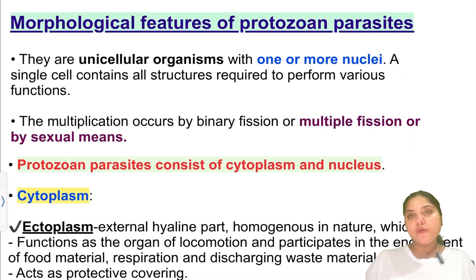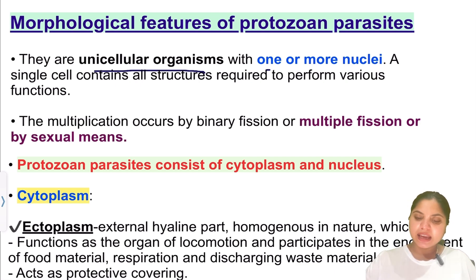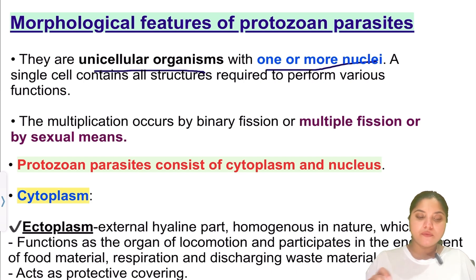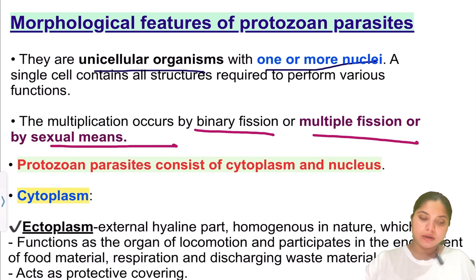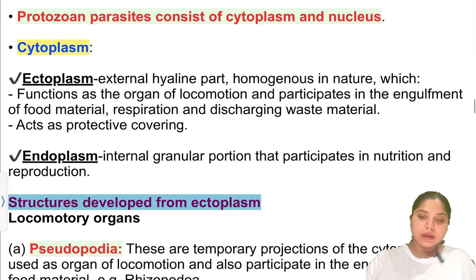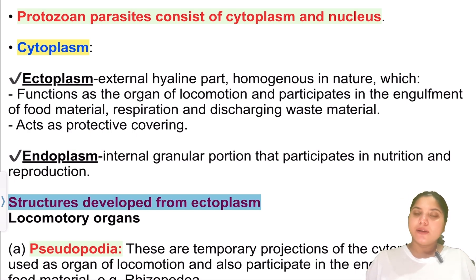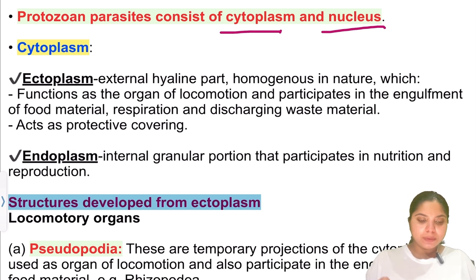Looking at the morphological features of protozoa parasites: they are unicellular organisms with one or more nuclei. A single cell performs various functions. Multiplication occurs by binary fission, multiple fission, or sexual reproduction. Protozoa parasites consist of cytoplasm and nucleus. The cytoplasm is of two types: ectoplasm and endoplasm — ecto meaning outer surface, endo meaning inner surface.